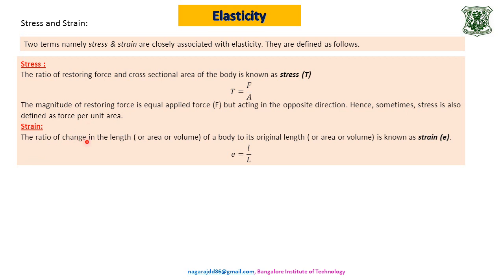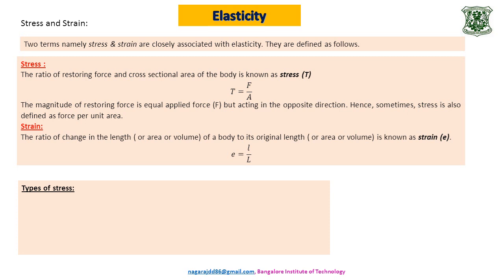Strain is the ratio of change in length, area, or volume of a body to its original length, area, or volume — that is, the ratio of change in dimension to original dimension. It is written as e = l / L, where small l is the change in length and capital L is the original length. It can also be change in area divided by original area, or change in volume divided by original volume. Strain is a dimensionless quantity — it carries no unit.